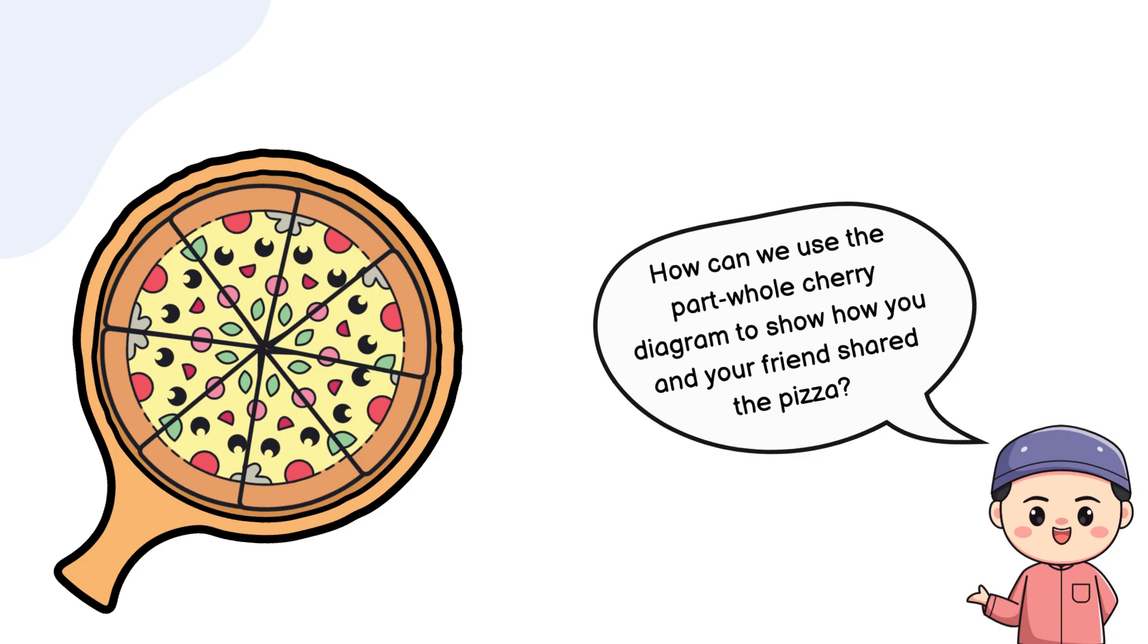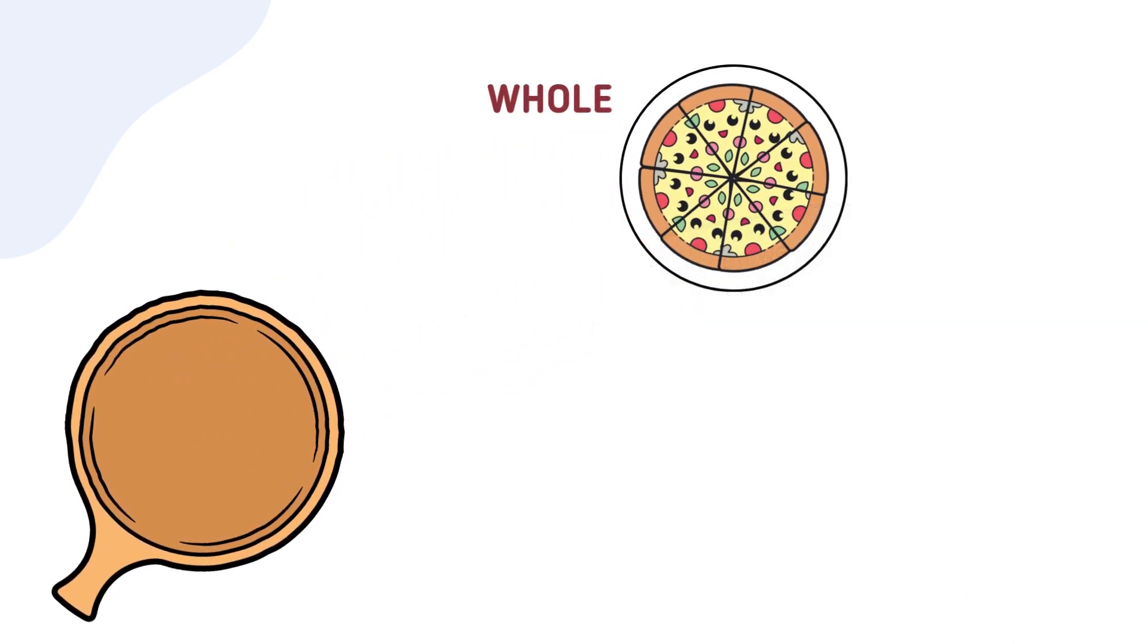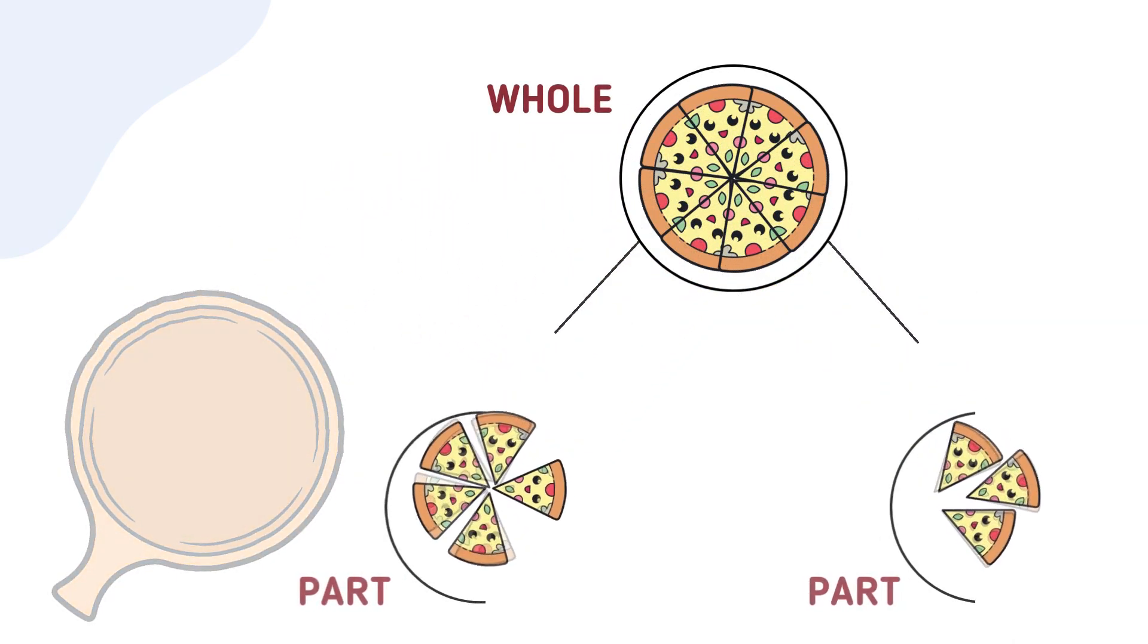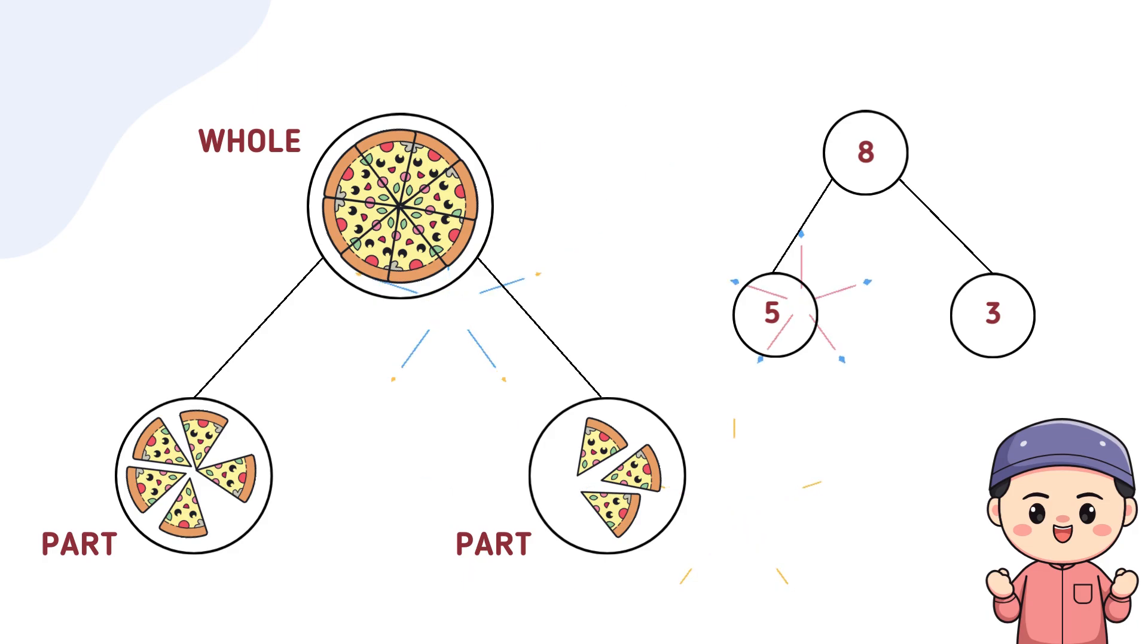Did you figure it out? Let's check it together. The whole is the total number of slices, 8. One part is your 5 slices and the other part is your friend's 3 slices. Together, these parts make up the whole pizza. Yum.